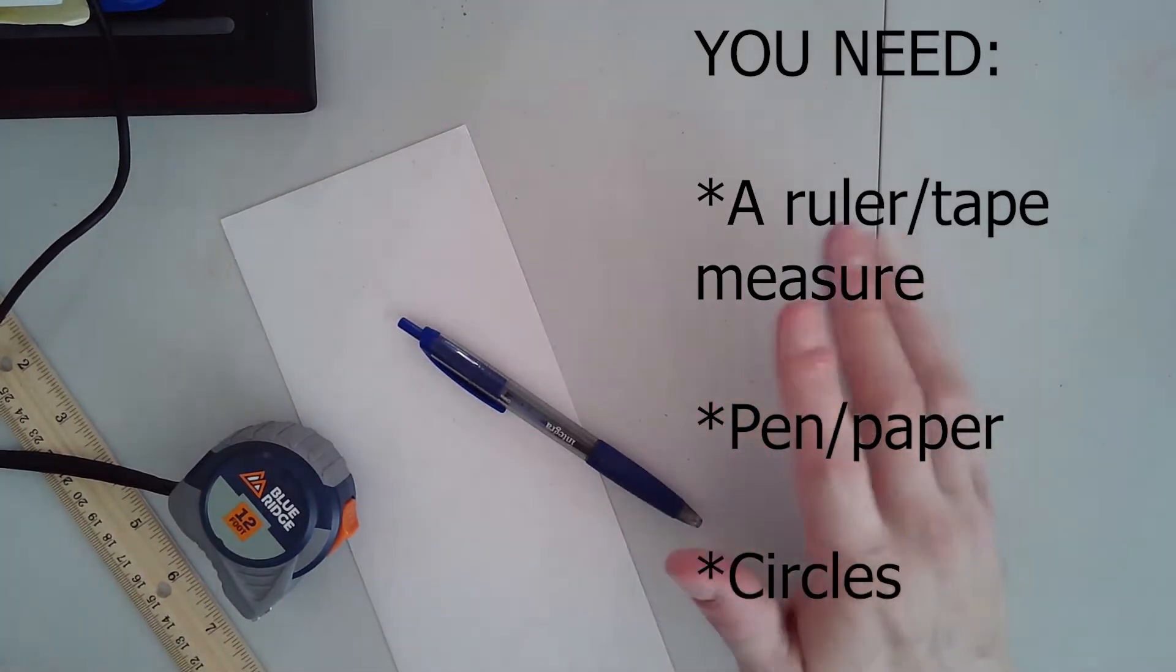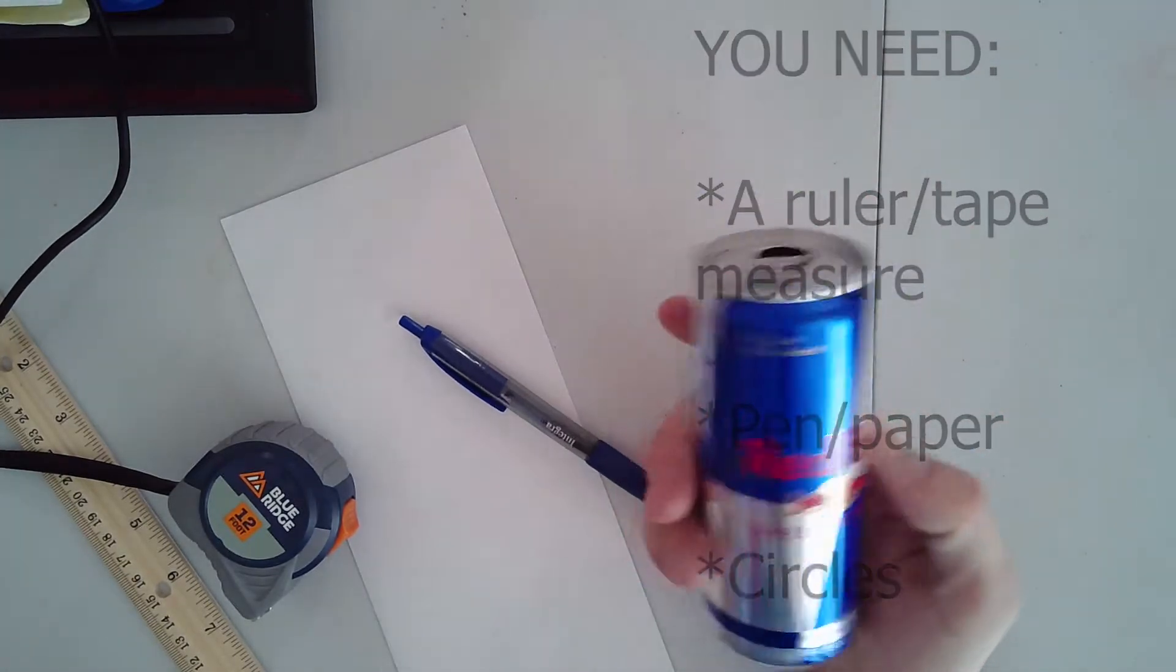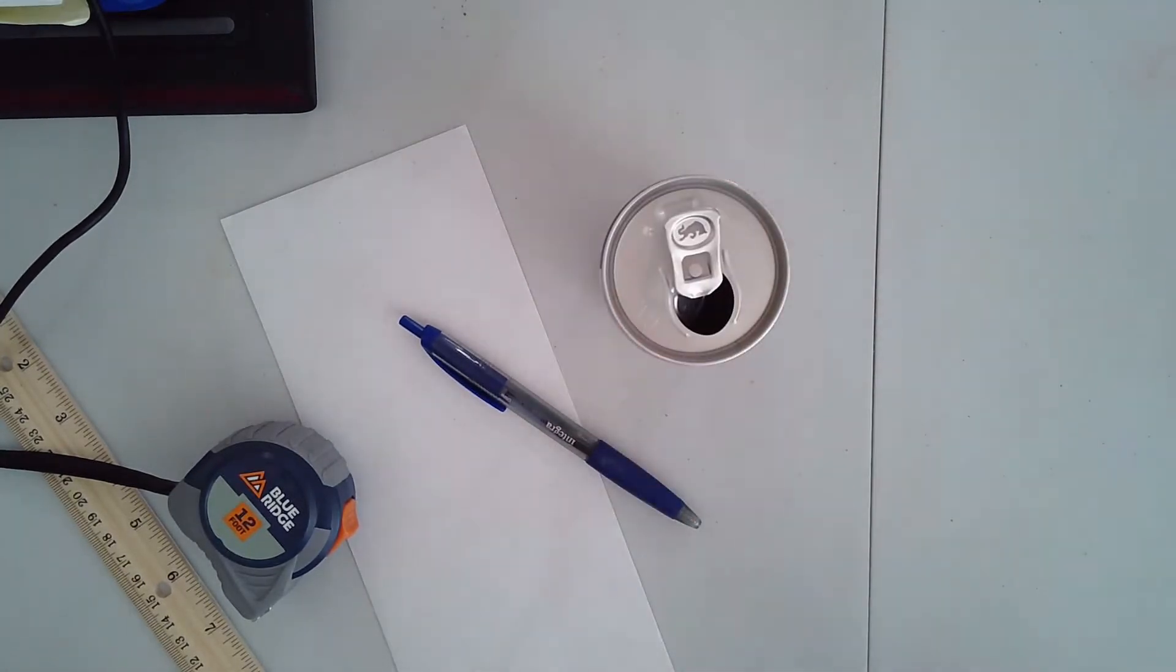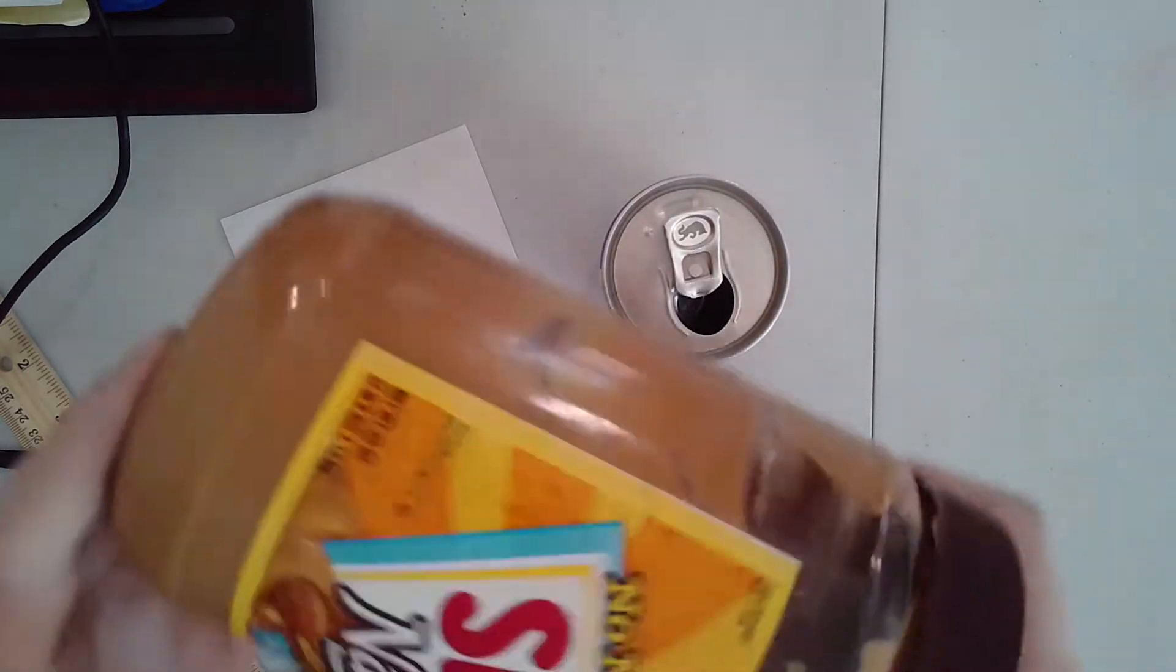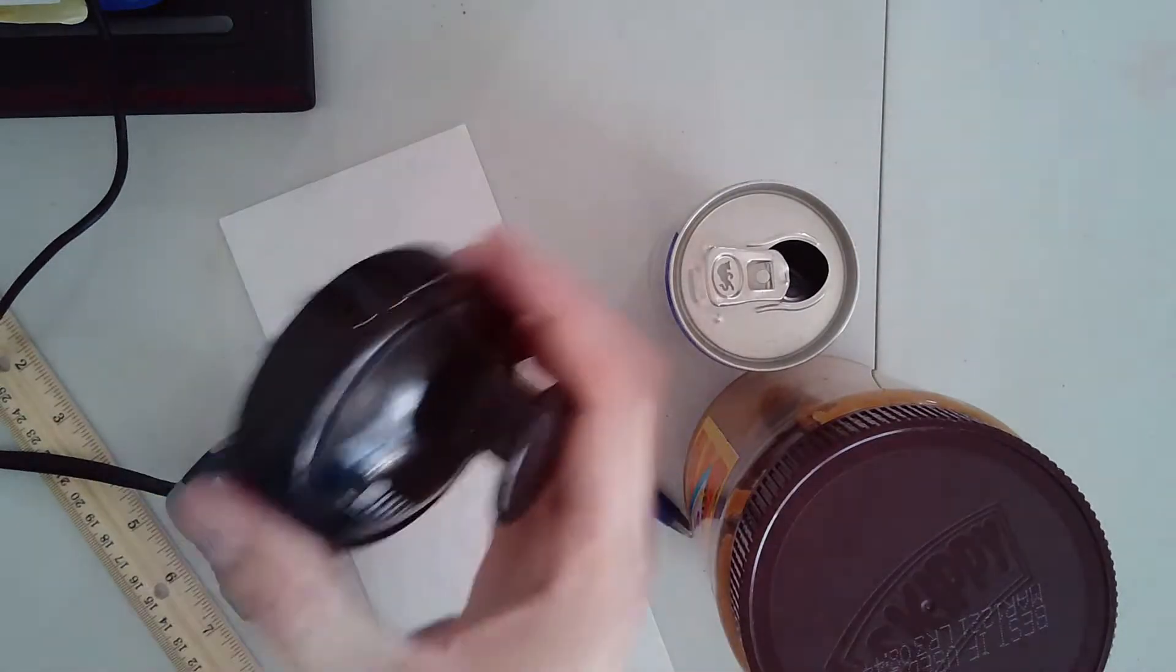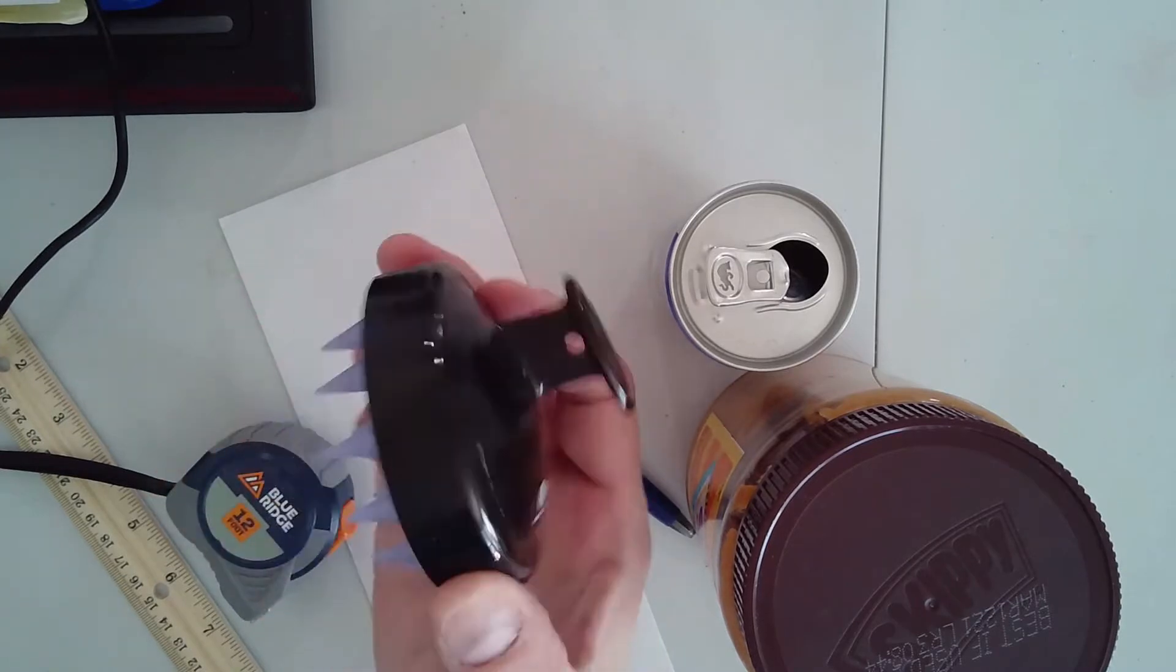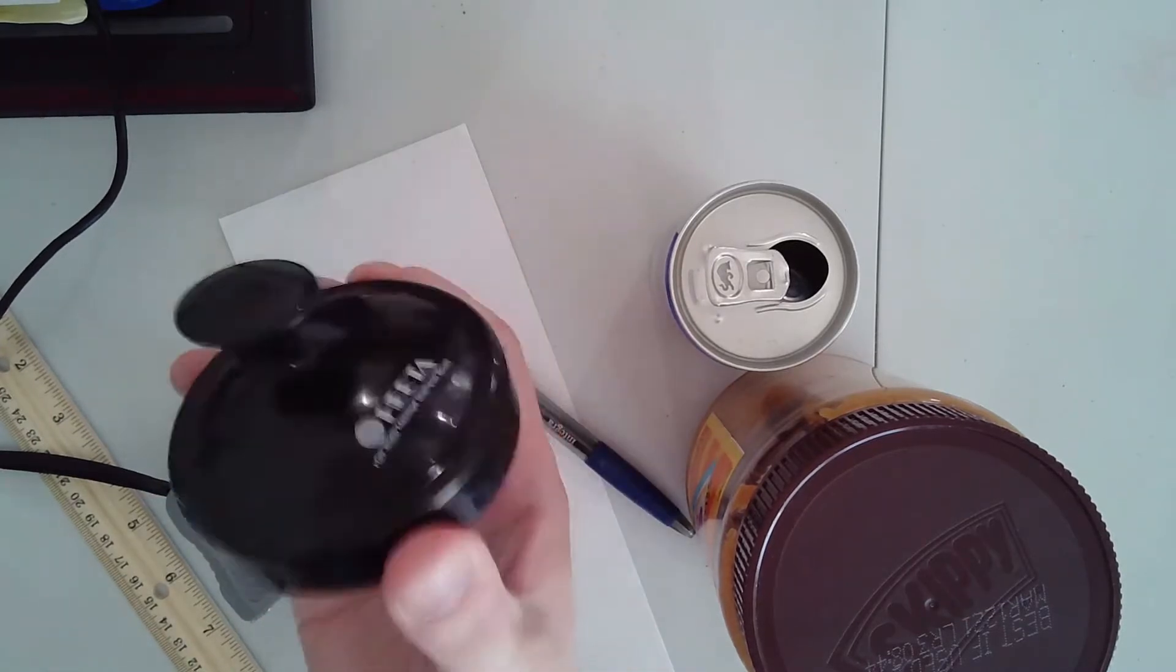Now, you should be able to find circles all around your house. I've got this Red Bull can here. That's a circle. I've got this jar of peanut butter here. That's a circle. I've got this brush, which is meant for getting shampoo into very thick hair. Don't judge me. That's a circle.